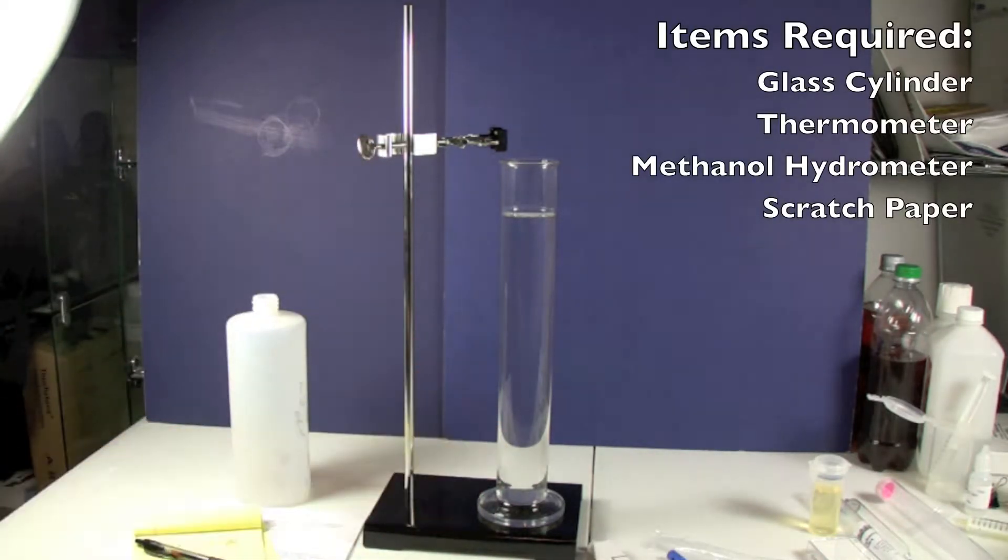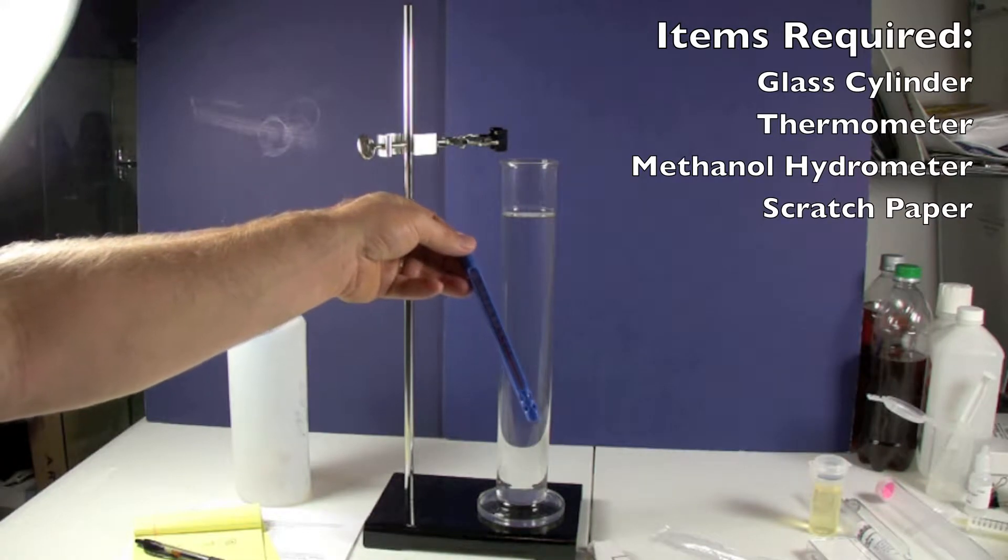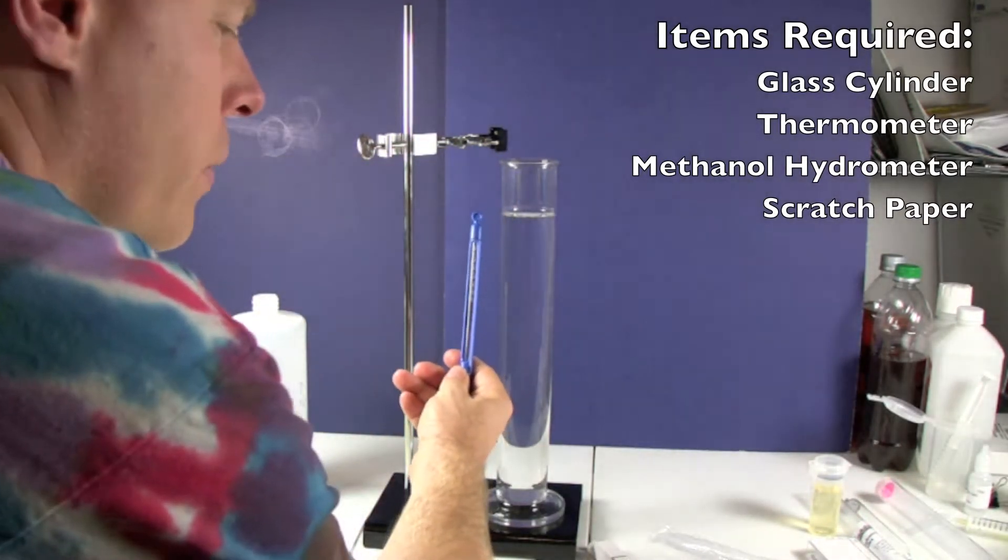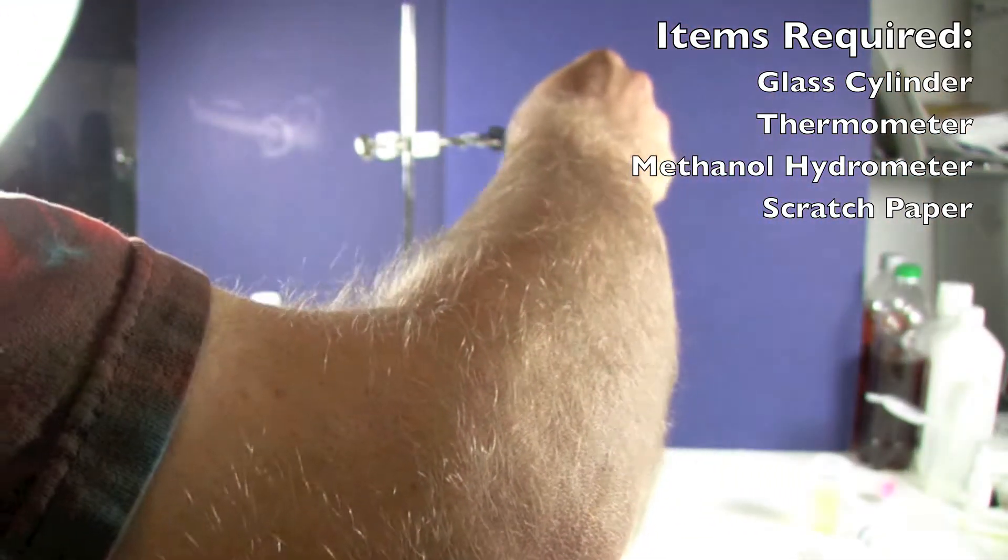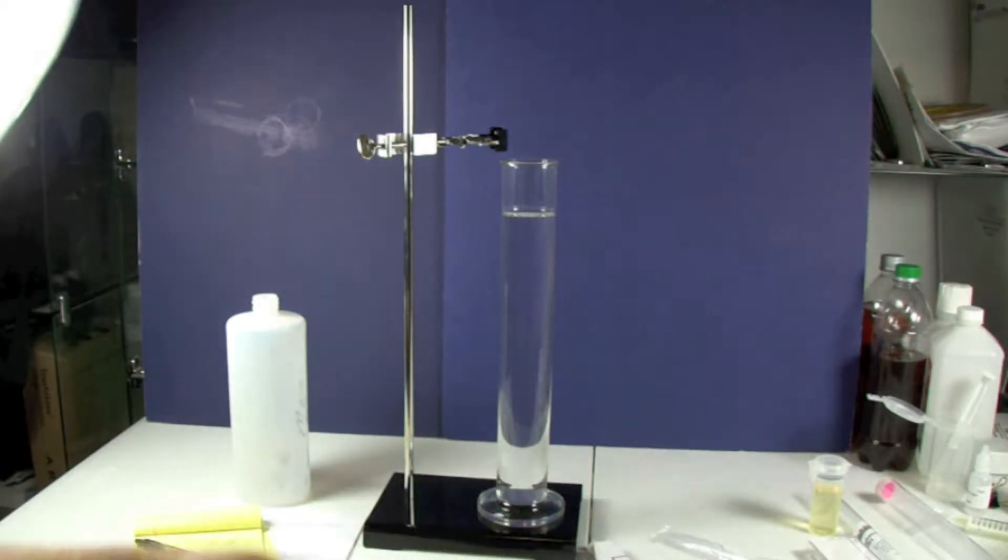To do this you'll need a cylinder to put some methanol in, a thermometer that's accurate down to one degree. You'll need a hydrometer specifically for measuring methanol which this one is. Then we've got this handy stand that allows us to put a thermometer in here and measure this.